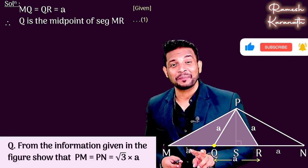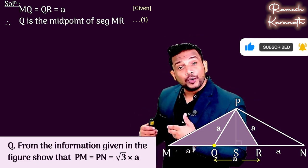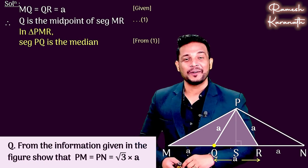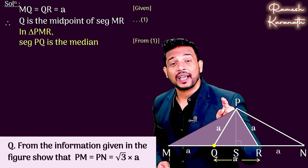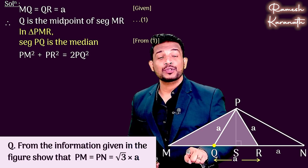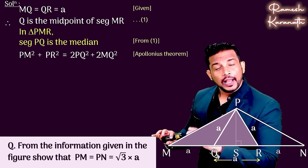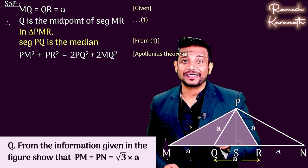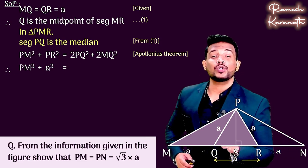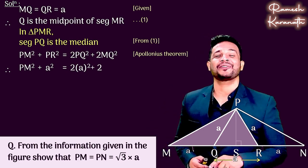In triangle PMR, segment PQ is the median from result one. So if it is the median, then we apply it. What do we write? PM square plus PR square is equal to twice of PQ square plus twice of MQ square. That means twice of a square.